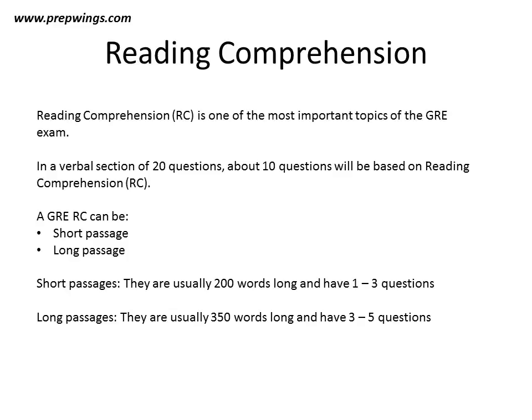A GRE RC can be a short passage or a long passage. Short passages are usually 200 to 250 words long and have 1 to 3 questions. Long passages are usually 300 to 400 words long and have 3 to 5 questions.